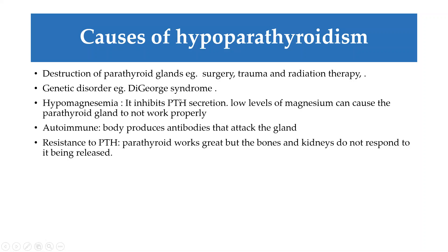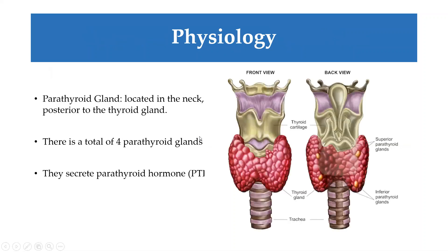Genetic disorders can also cause hypoparathyroidism — the classical one is DiGeorge syndrome. Low levels of magnesium, hypomagnesemia, can also inhibit production of parathyroid hormone. Additionally, resistance to parathyroid hormone itself — where production is adequate but the target areas like bones and kidneys are not responding — can lead to low effective levels of parathyroid hormone.